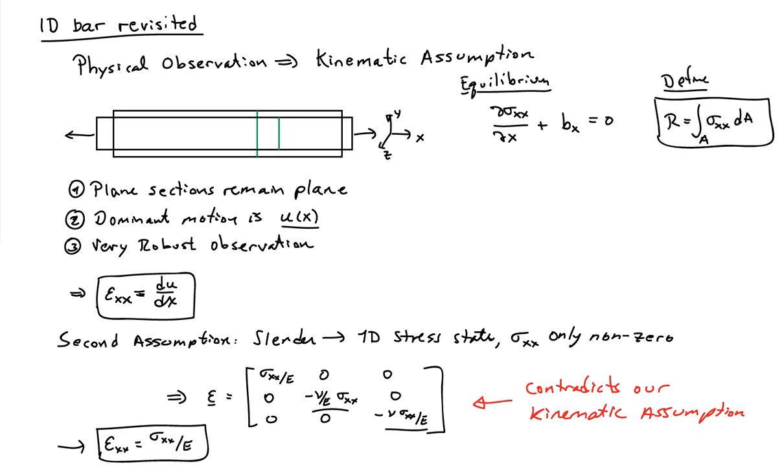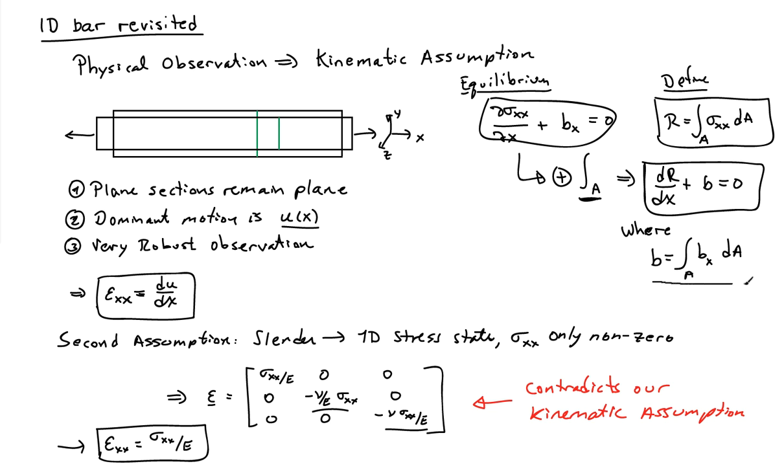To connect this to the one-dimensional equilibrium equations, I define the resultant force on the cross section: R(x) is the integral of sigma_xx over the cross sectional area. I can integrate my 3D equilibrium equation across the cross section, which gives dR/dx plus b equals zero, where b is the integral of b_x over the cross sectional area. This b is per unit length, and that one is per unit volume.